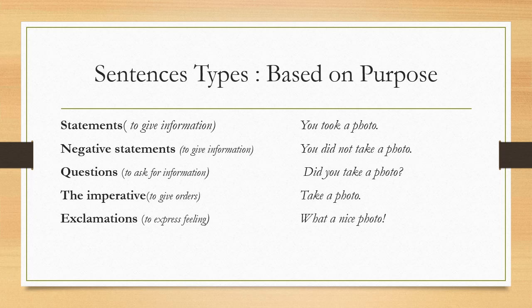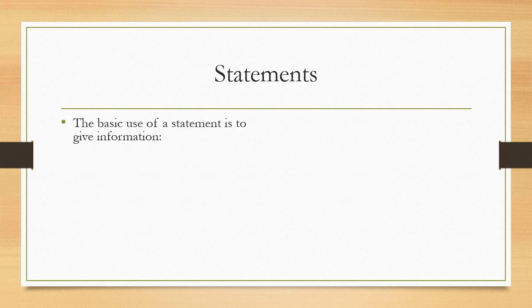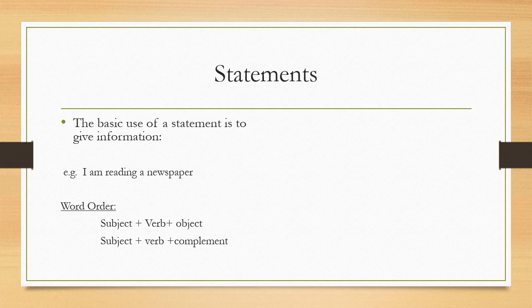Once we look at these different types of sentences, one thing we come to notice is that the word order in each type of sentence is different, and of course the purpose is also different. Now let's start with statements. The basic use of a statement is to give information. For example, I am reading a newspaper. This is a positive sentence. The word order in statements is subject plus verb, and then comes the object or complement. I am reading a newspaper. The subject is I, the verb is am reading, and the object is a newspaper.